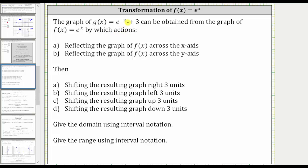The graph of g(x) = e^(-x) + 3 can be obtained from the graph of f(x) by which actions? We first want to select whether we need to reflect f(x) across the x-axis or the y-axis, and then whether we need to shift the resulting graph right, left, up, or down three units. Let's explore this.